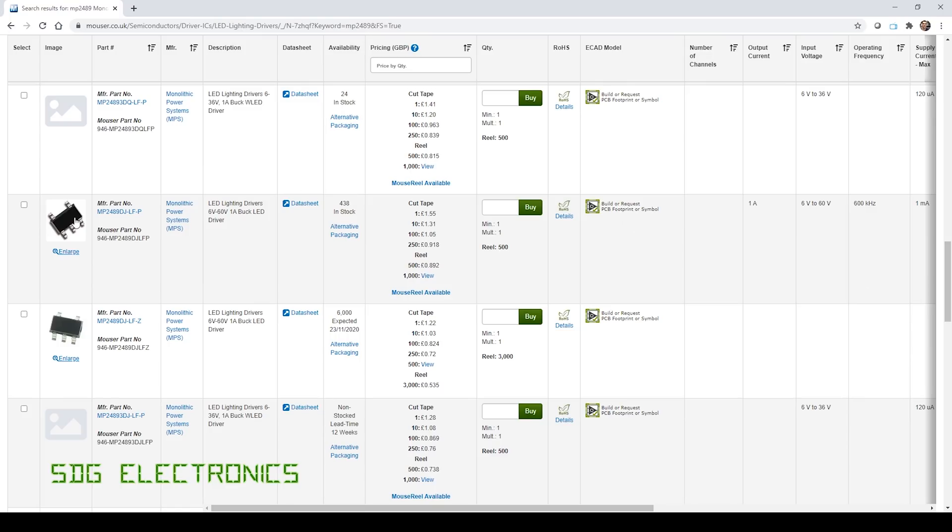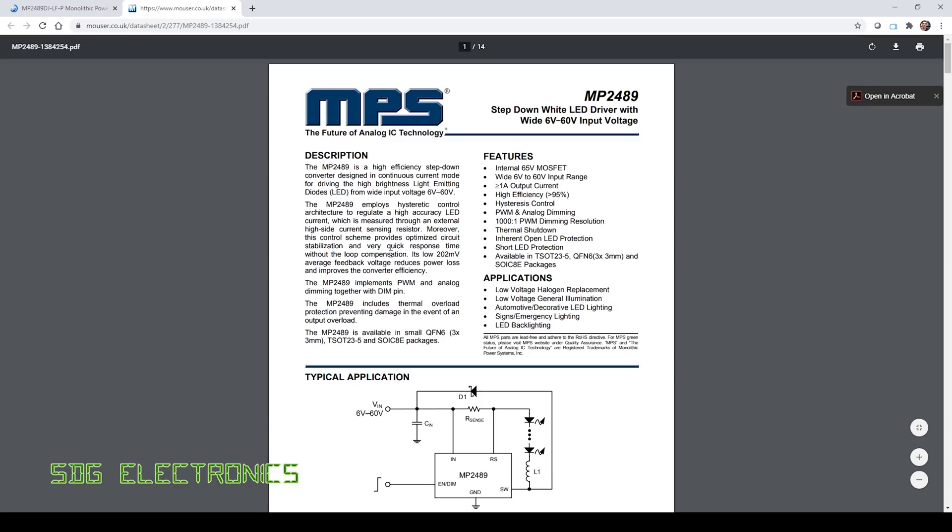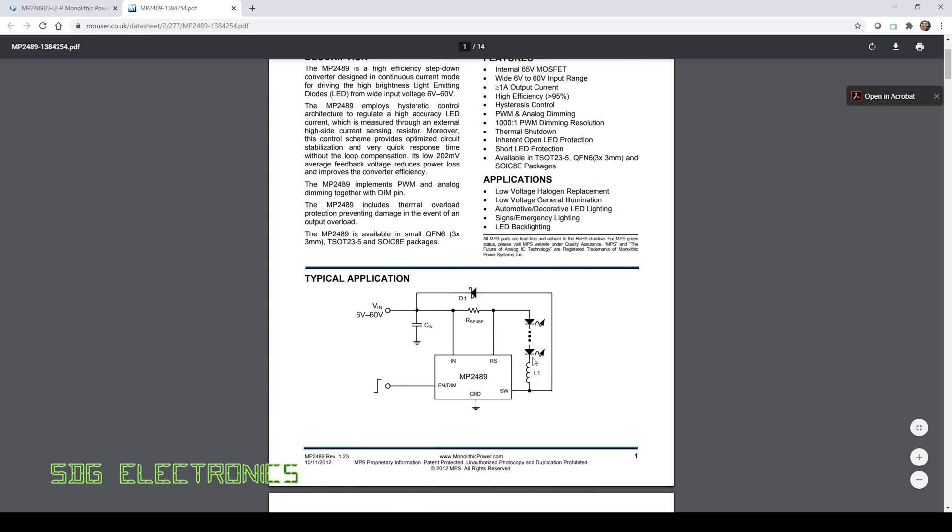So here they are on Mouser, quite a bit more expensive, £1.55 plus VAT each, although they do go down a little bit in volume. But that pack of 40, I think cost me about £55 or so, so a little bit more pricey. They are made by monolithic power systems. And we can have a look at the data sheet. But you can see that the schematic is exactly the same. There's just a few differences that we do need to account for on our PCB.